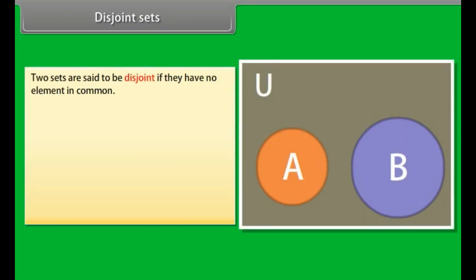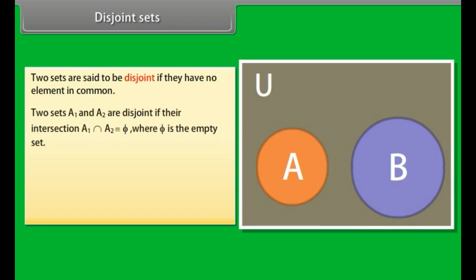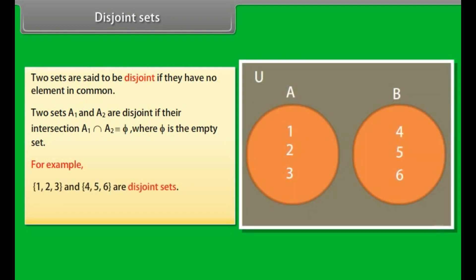Disjoint sets. {4, 5, 6} are disjoint sets. The sets of alive and dead people are disjoint. The disjoint sets can be represented by means of a Venn diagram as shown.